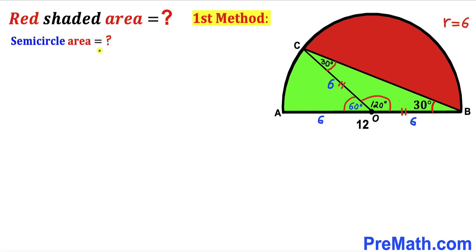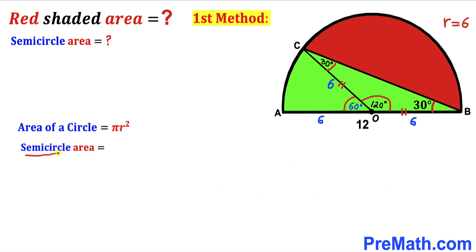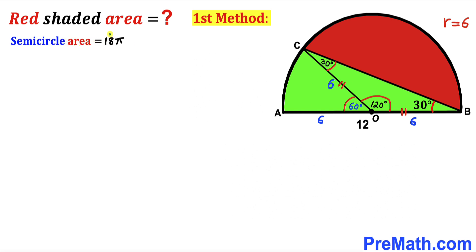Now we calculate the area of the semicircle. Recalling the area of a circle: A = πr². The semicircle area is πr² / 2. With radius r = 6, the semicircle area is π/2 × 6² = 18π square units.